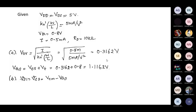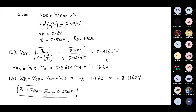In the common mode, VGS is common for both transistors — we only differentiate VGS1 and VGS2 in differential mode. Using VCM minus VGS, VS is calculated as minus 3.1162 volts. The bias current divided by 2 gives ID1 and ID2 each equal to 0.25 milliamps. This I-by-2 split applies only in common mode, not differential mode.